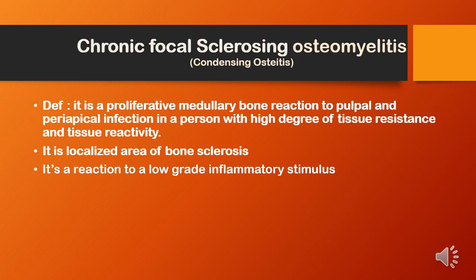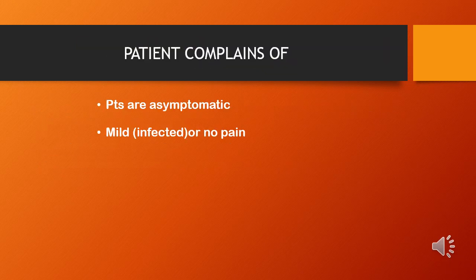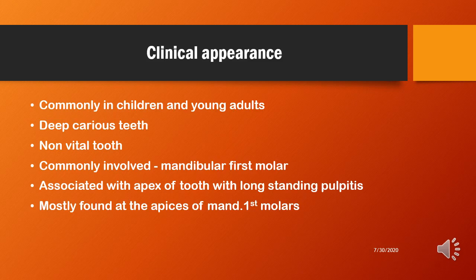Coming to chronic focal sclerosing osteomyelitis, also known as condensing osteomyelitis. It is a proliferative medullary bone reaction to pulp and periapical infection in a person with a high degree of tissue resistance and tissue reactivity. It is a localized area of bony sclerosis and is a reaction to a low-grade inflammatory stimulus. The patient may complain of mild or no pain and is usually asymptomatic. It is most commonly associated with children and young adults, with deep caries, and the non-vital tooth commonly involved is the mandibular first molar.